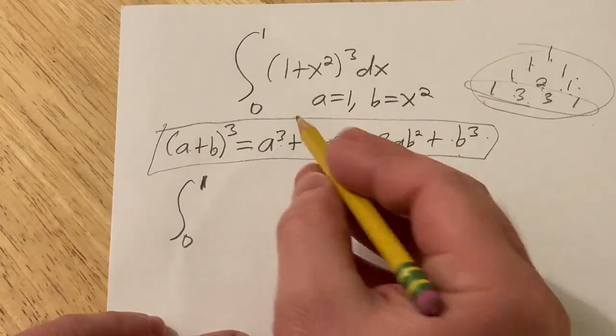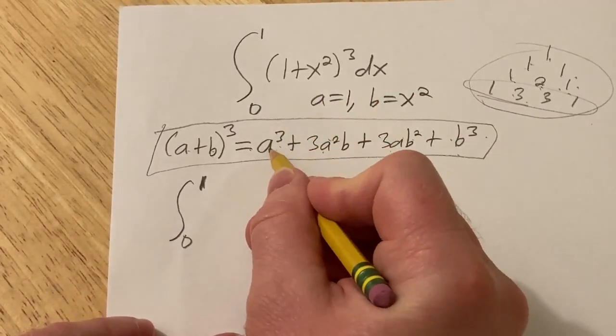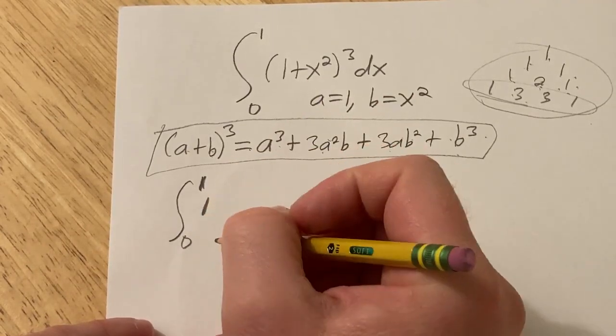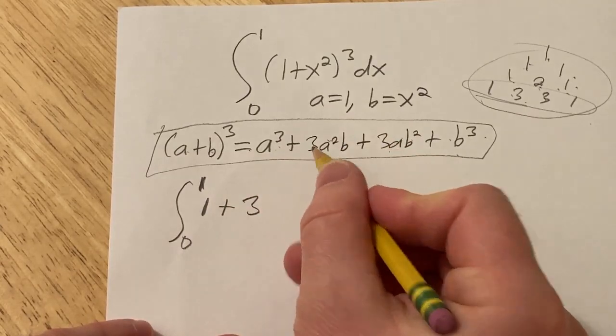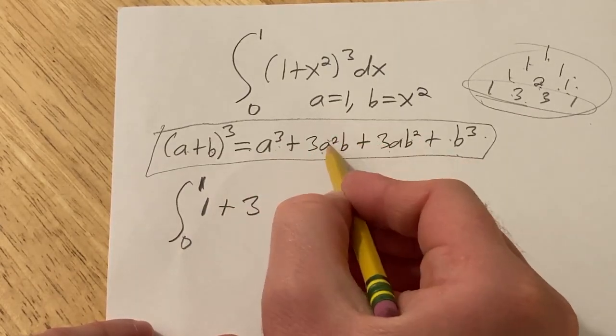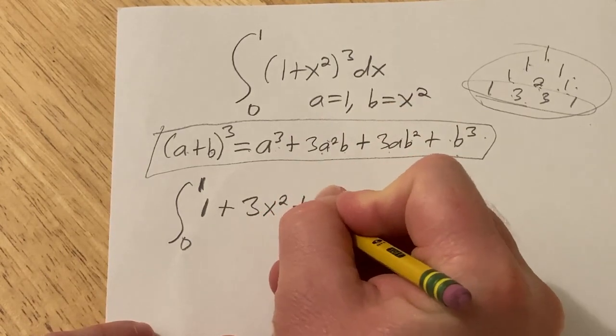So if a is 1, then it's going to be 1 cubed, so just 1. Plus the 3 is always there, that's part of the formula. a is 1, so that's no problem. And then b is x squared, so x squared, plus 3.